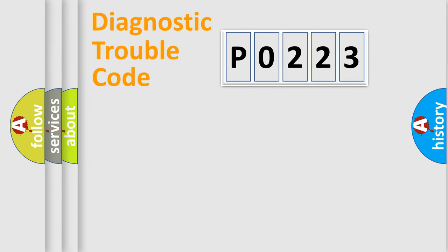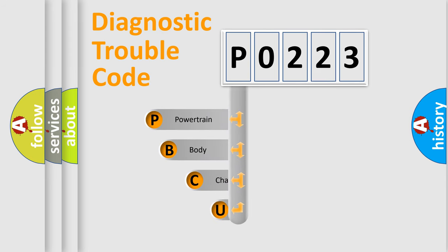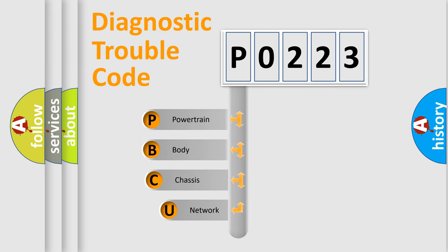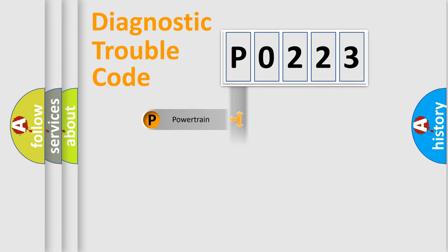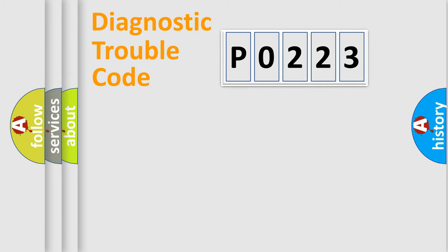Let's look at the history of diagnostic fault code composition according to the OBD2 protocol, which is unified for all automakers since 2000. We divide the electric system of the automobile into four basic units: Powertrain, Body, Chassis, and Network.